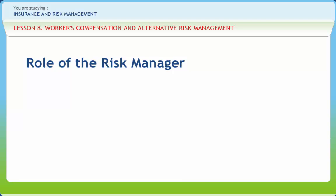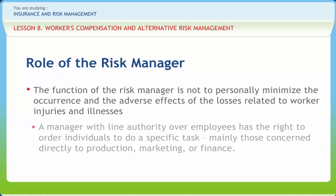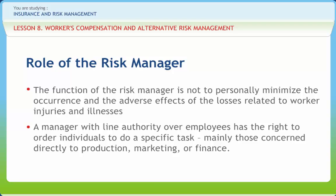It is important to determine the types and methods of communication between the risk manager and all other managers. The function of the risk manager is not to personally minimize the occurrence and adverse effects of losses related to worker injuries and illnesses, but instead to coordinate the efforts of other managers in the prevention of injuries and illnesses. A manager with line authority over employees has the right to order individuals to do a specific task, mainly those concerned directly with production, marketing, or finance. The staff manager has the right to advise and persuade other managers to take actions designed to minimize the potential for worker injury or illness. These managers may accept or reject the advice and are responsible for the results of that decision.